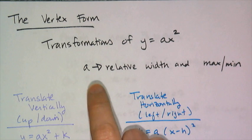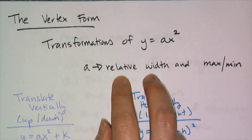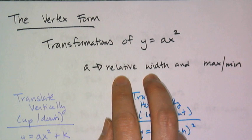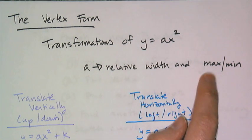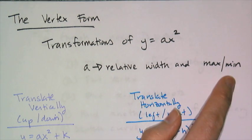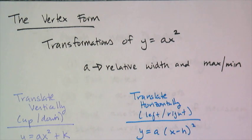Remember, the a tells us the relative width relative to the parent of y equals 1x squared, and if the vertex is a maximum or minimum, which means it's happy face or frowny face.